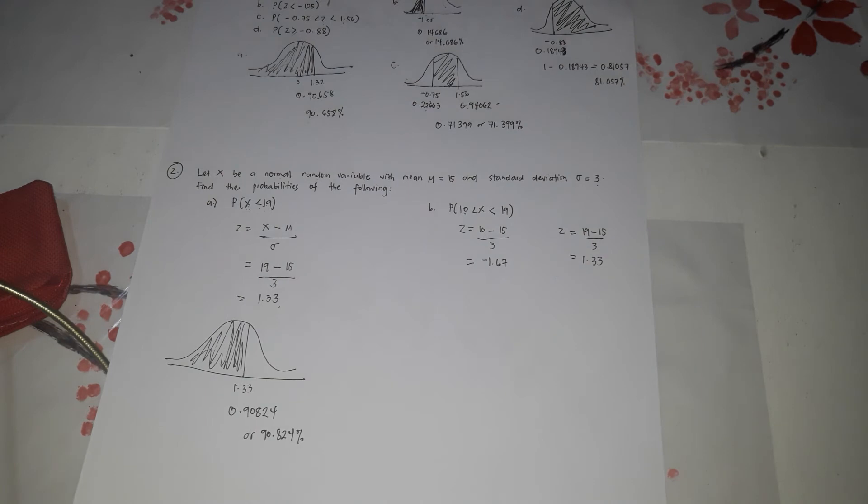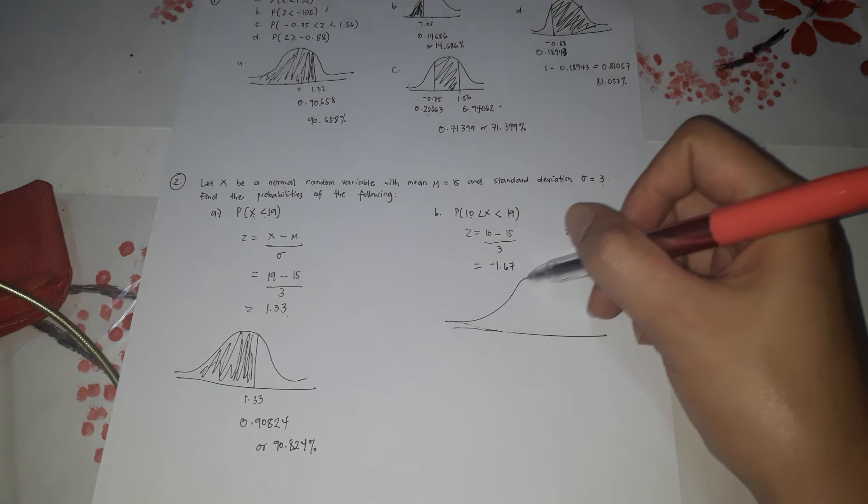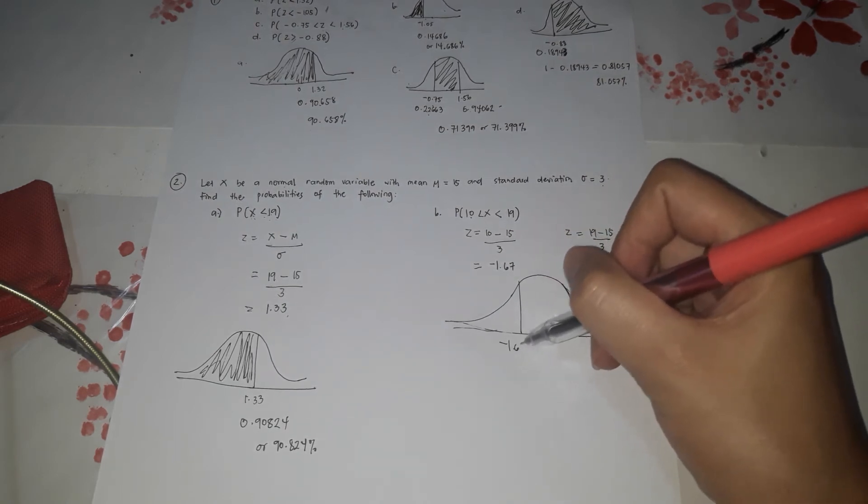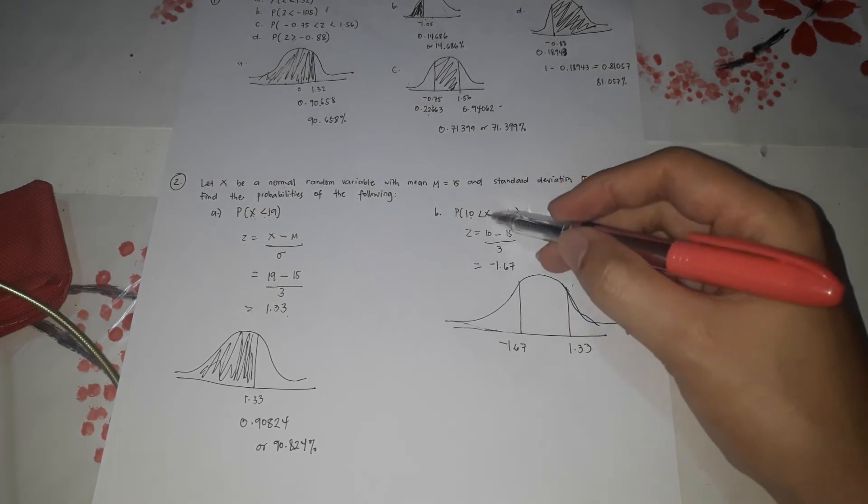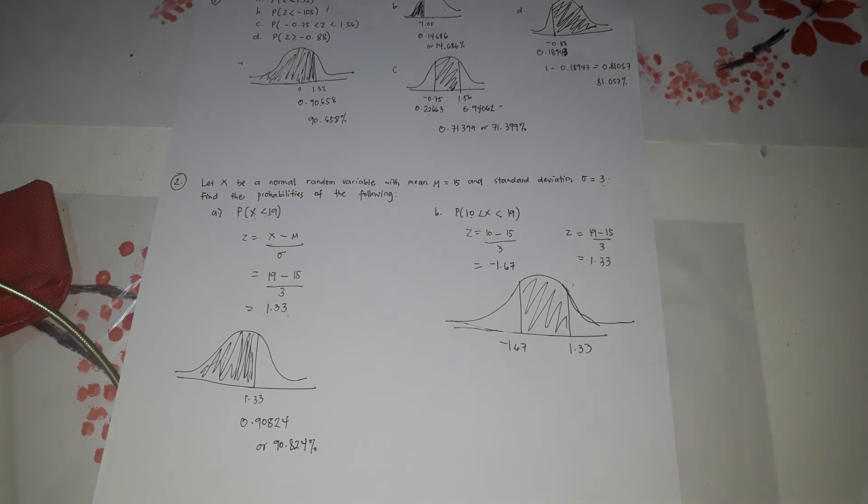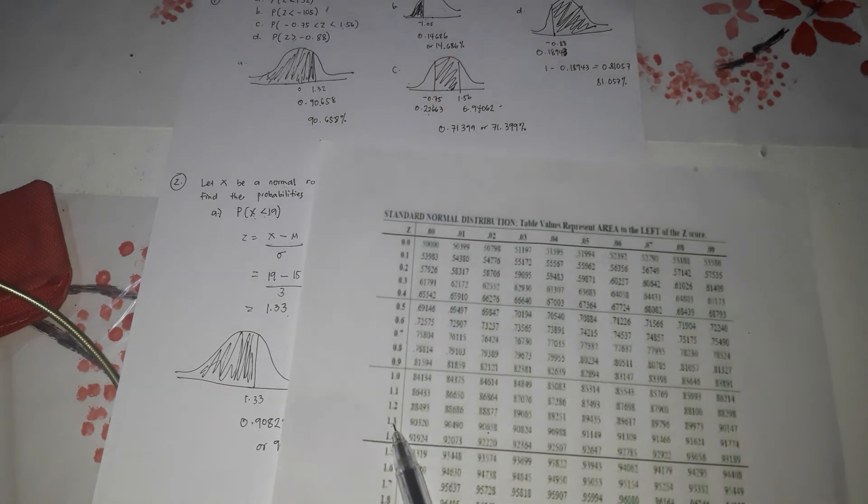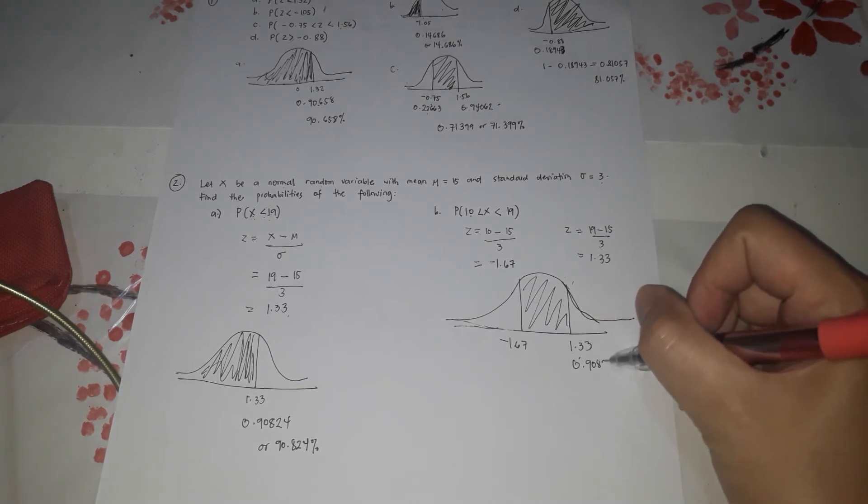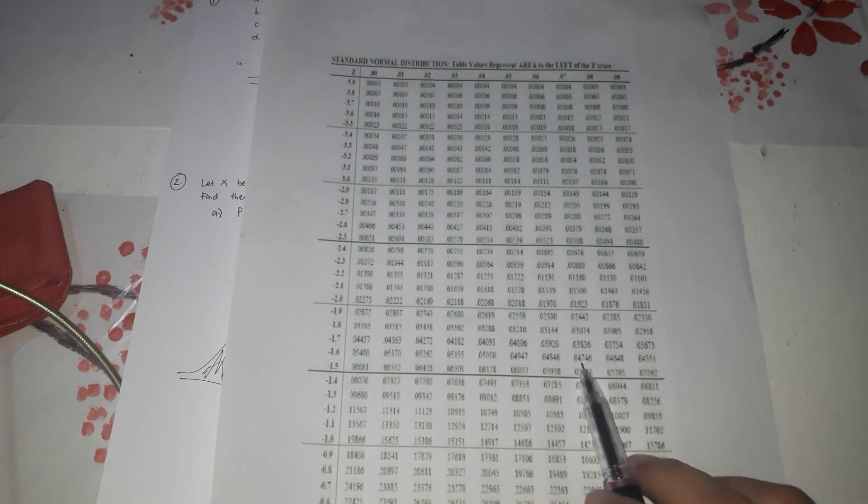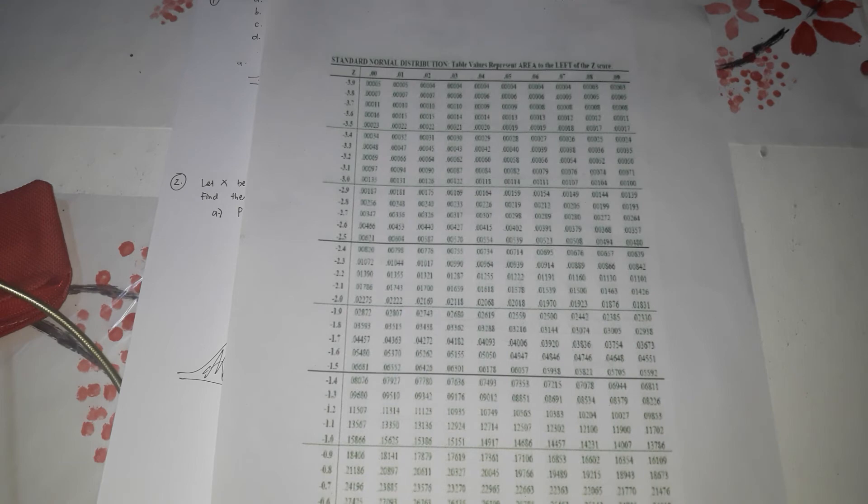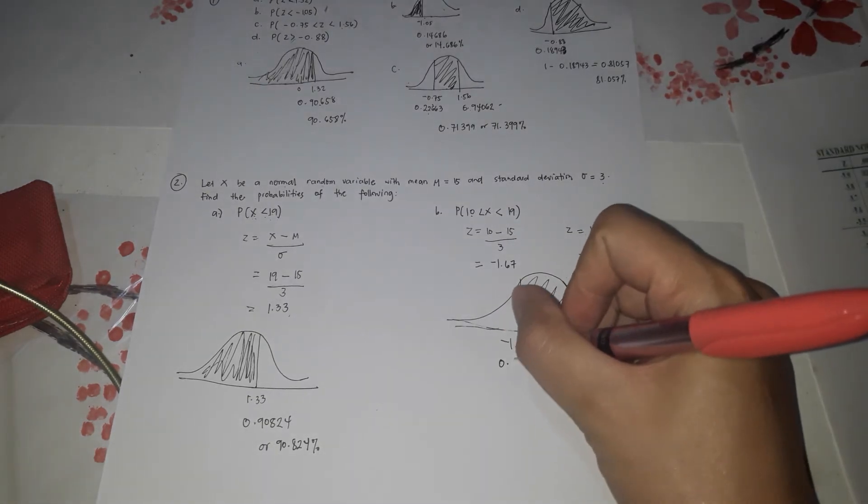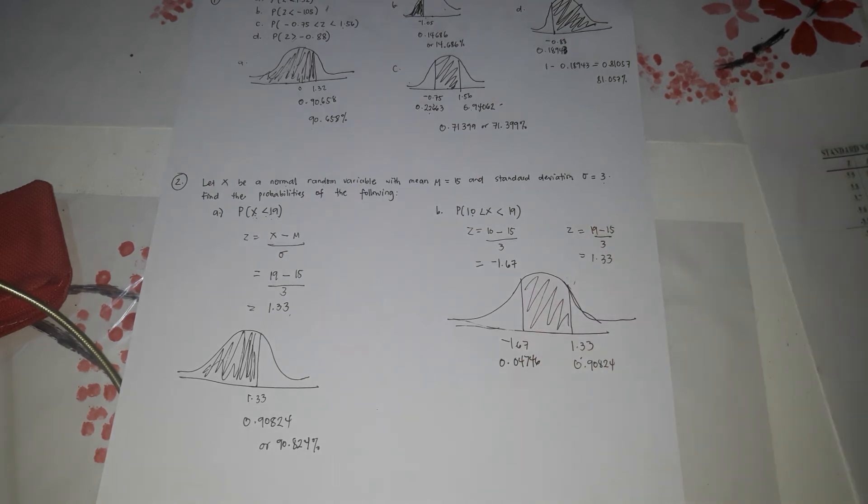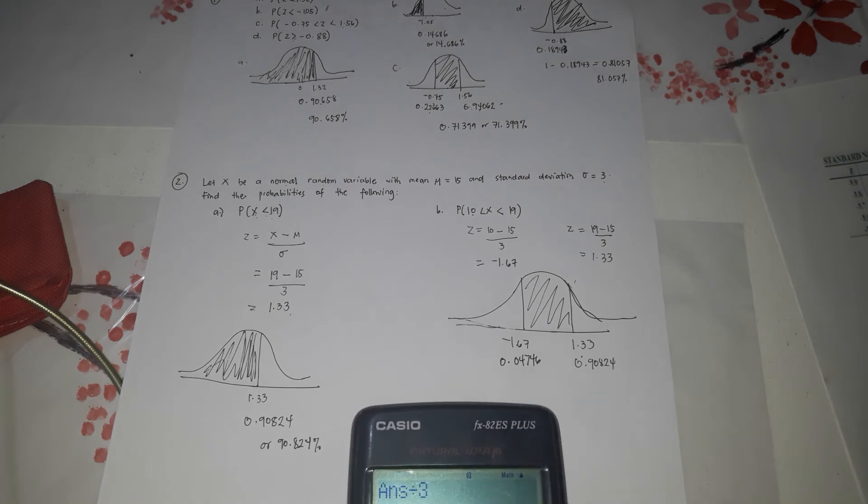Negative 1.67. So let's draw first the bell curve. So it's negative 1.67 and 1.33. In the middle is X. So let's find the area for negative 1.67. First, let's find 1.33. 1.33. 0.9824. Negative 1.67. 0.04746. So when it's between, you just subtract them. That's the probability or area.